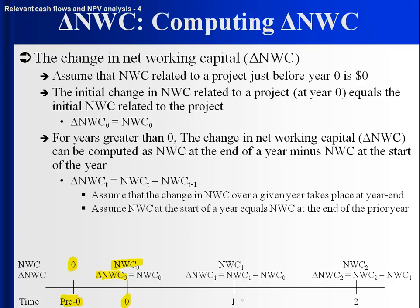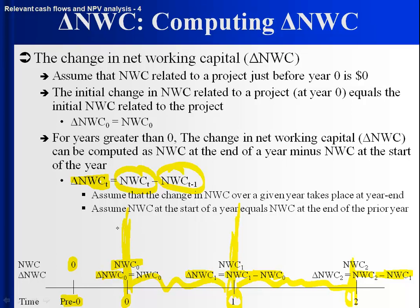The change at time one is equal to the level at time one minus the level at time zero. At time two, it's equal to the level at time two minus the level at time one. We use the convention that time one is the end of one period and the beginning of the next. So the general formula is: the change at time t equals the level at time t minus the level one period before. We're looking at discrete points in time, so the change over a period gets incorporated at each point.